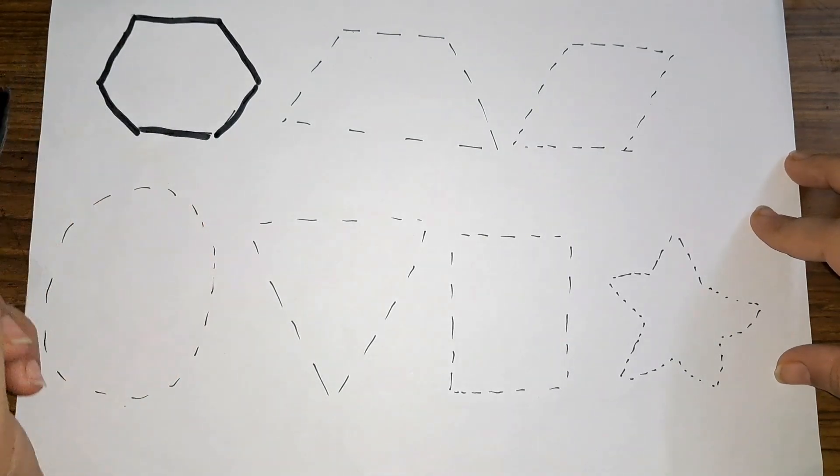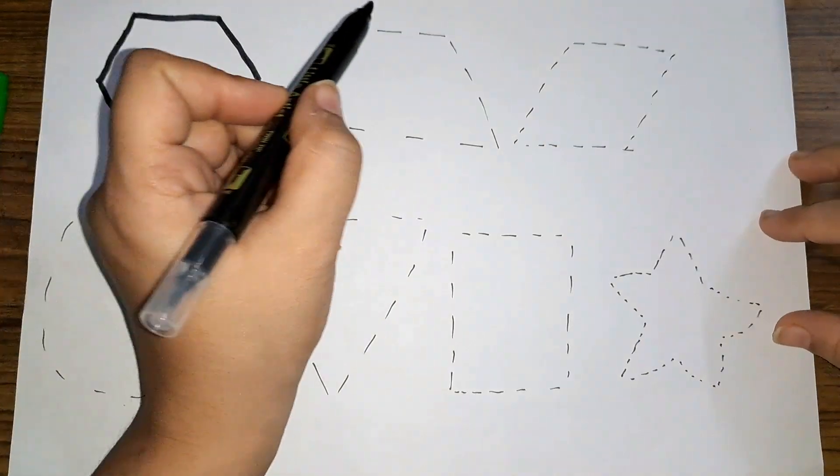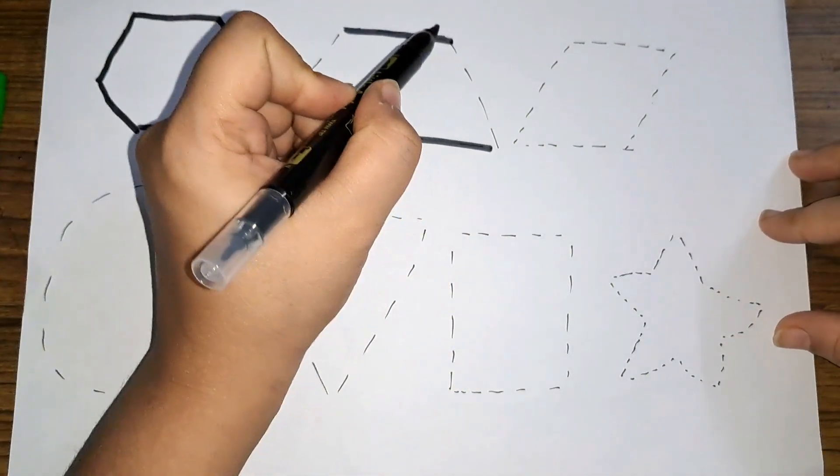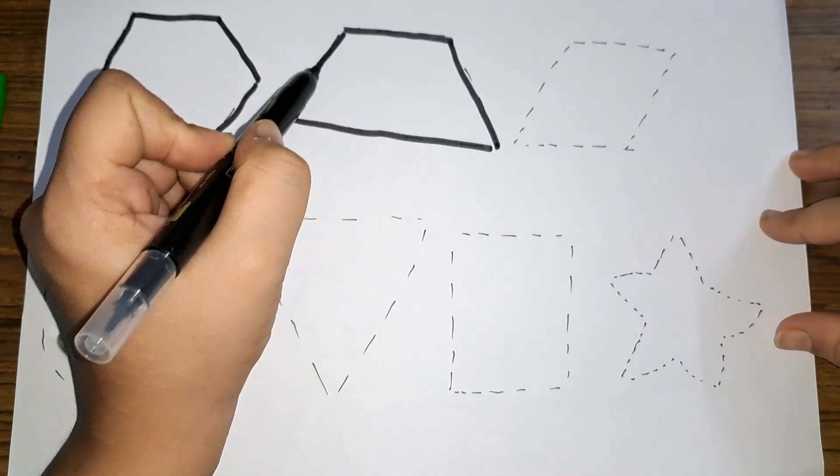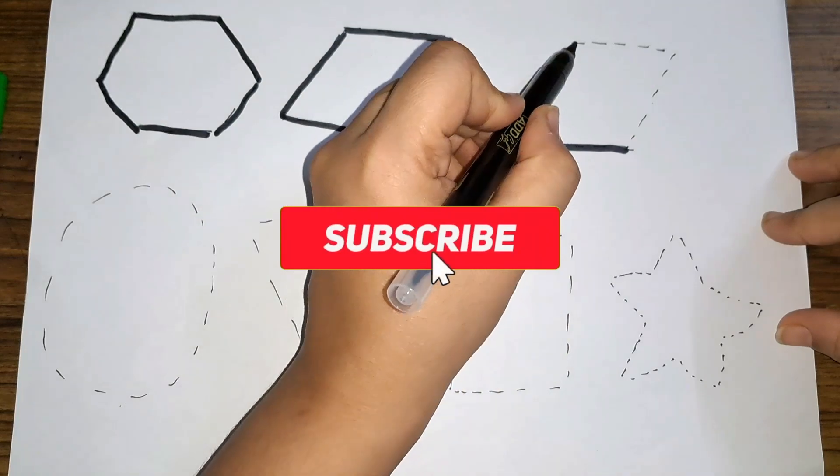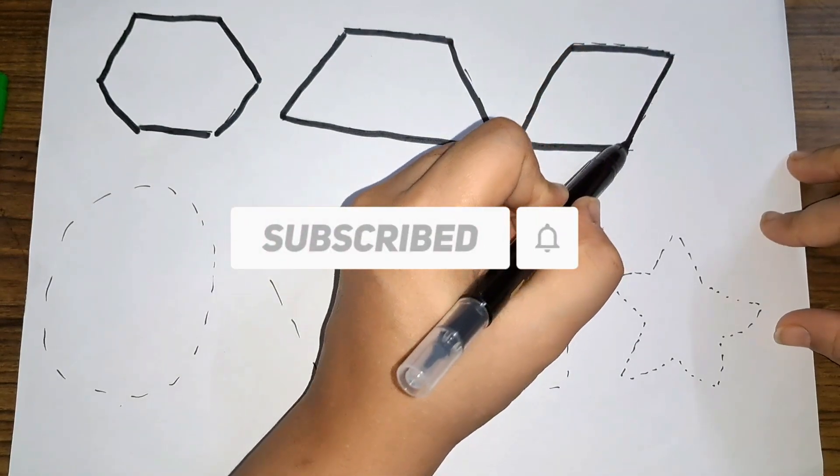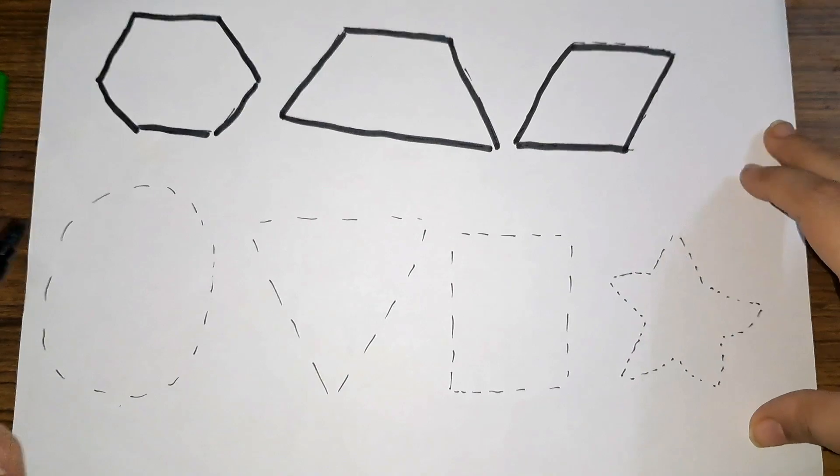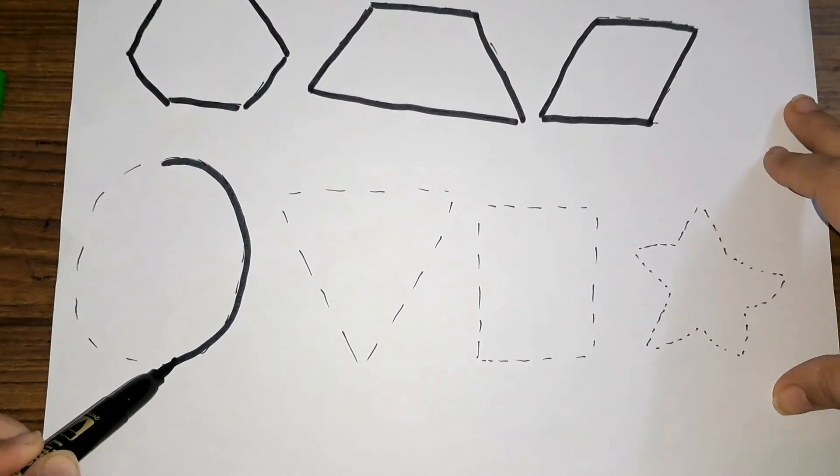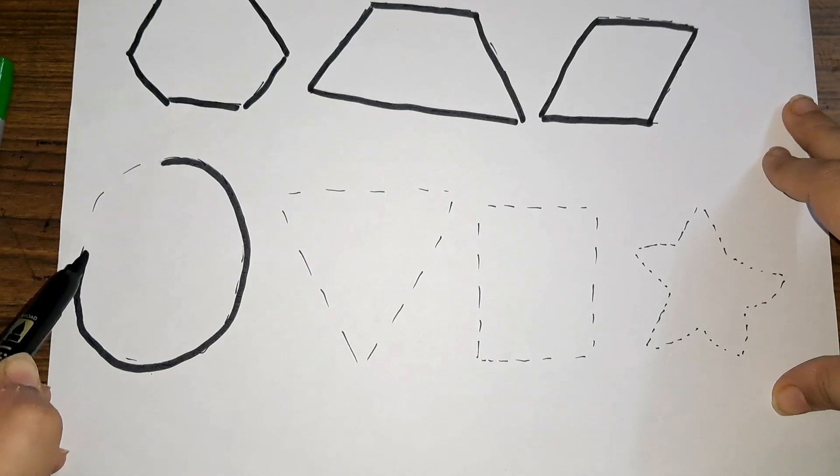This is a hexagon. This is a trapezium. This is a rhombus. Next we have, what shape is this?